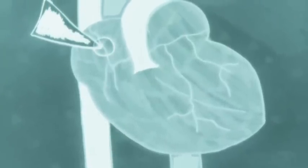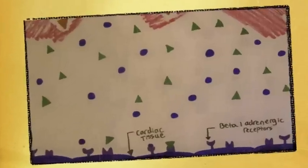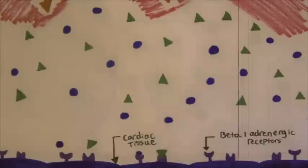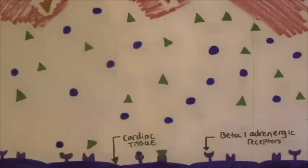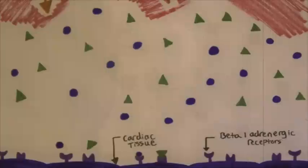First, we're going to take a look at the cardiac tissue on the cellular level in order to understand exactly how these two hormones play such a significant role. When epinephrine and norepinephrine come into contact with the cardiac tissue cell, they bind to beta-1 adrenergic receptors on the cell membrane. Beta-1 adrenergic receptors are a type of metabotropic receptor, which is a receptor that deals with the secondary messenger system.